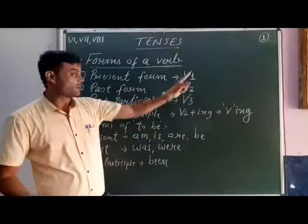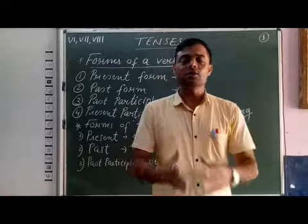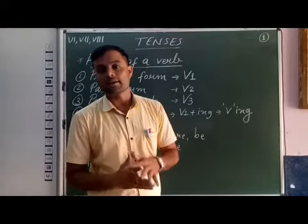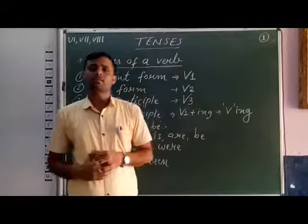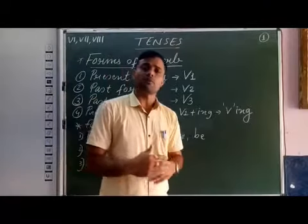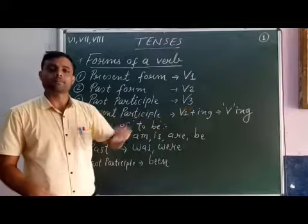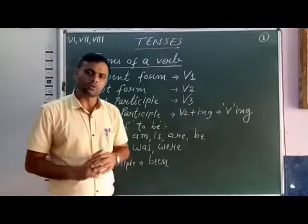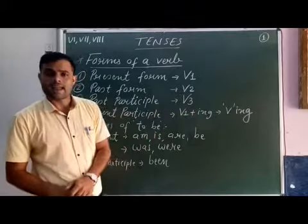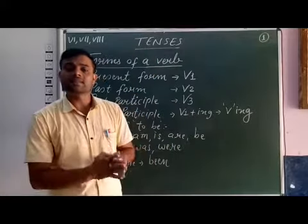V1 means present form, V2 means past form, V3 means past participle, and verb with -ing means present participle. Now, in all continuous tenses — there are six continuous tenses: present continuous, past continuous, future continuous, present perfect continuous, past perfect continuous, and future perfect continuous — we use the present participle, that is verb with -ing. In all six continuous tenses, we also use to be forms.